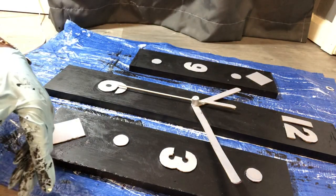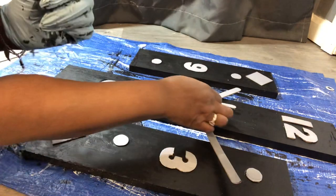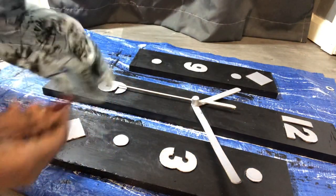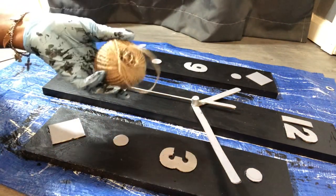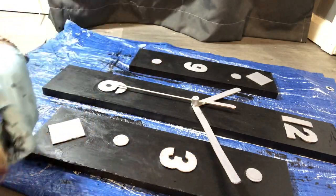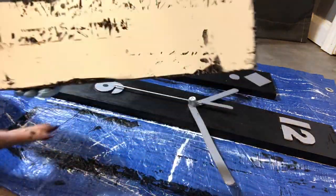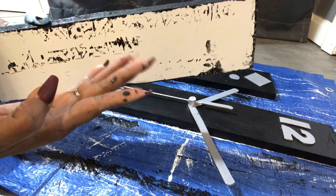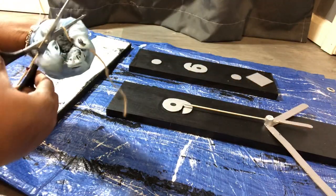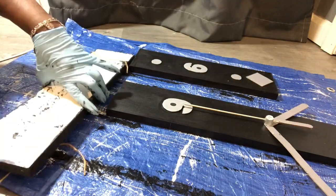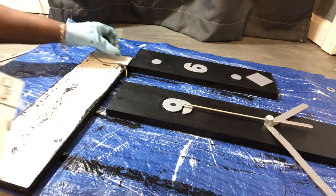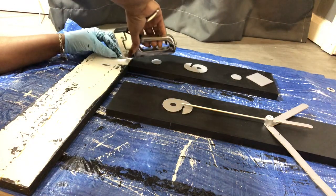The last thing that I'm getting ready to do is to actually place the hanging on the back and I'm just going to use twine and staples. I'm going to use a piece of twine and I'm going to staple it at the top.